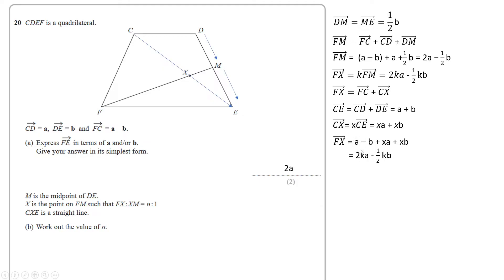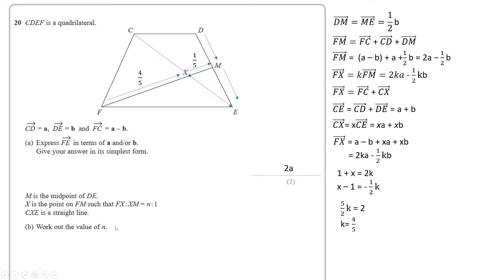We can compare the coefficients of the A vectors and the B vectors. Comparing A coefficients: 1 + λ = 2K. Comparing B coefficients: λ − 1 = −½K. Subtracting the second equation from the first gives 5/2 · K = 2, so K = 4/5. This means F to X is 4/5 of F to M, leaving X to M as 1/5, making the ratio 4 to 1 and therefore N = 4.